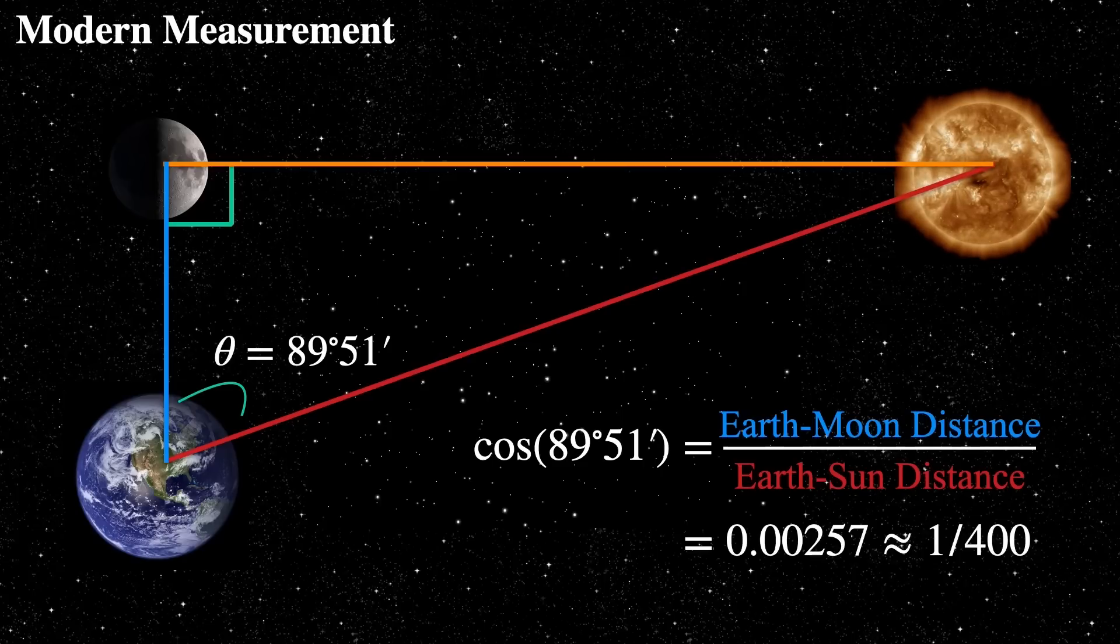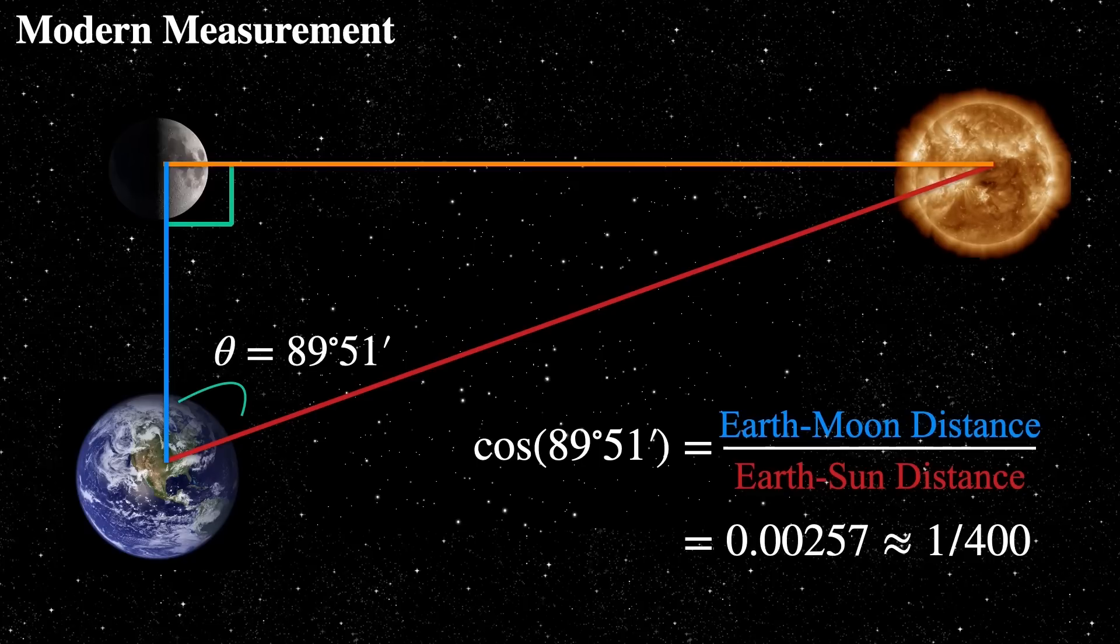The true earth sun distance, about 400 times that is the earth moon. So he's off by a factor of, I don't know, 20. But that's okay. Let's let him live with that. He did great.